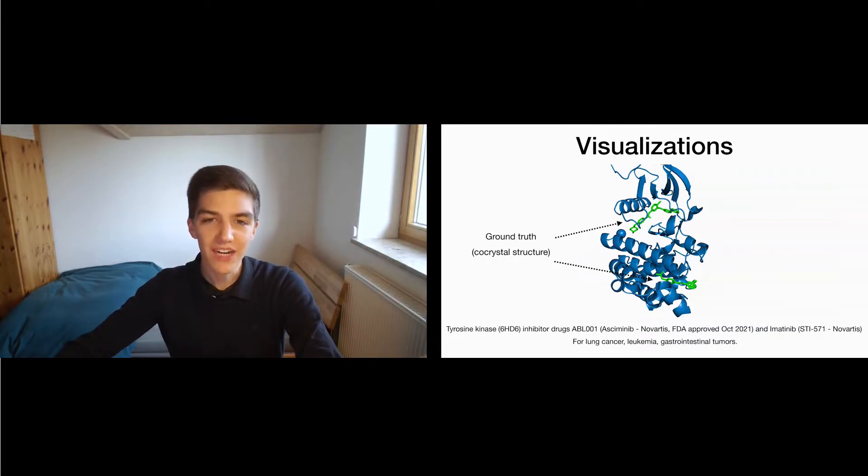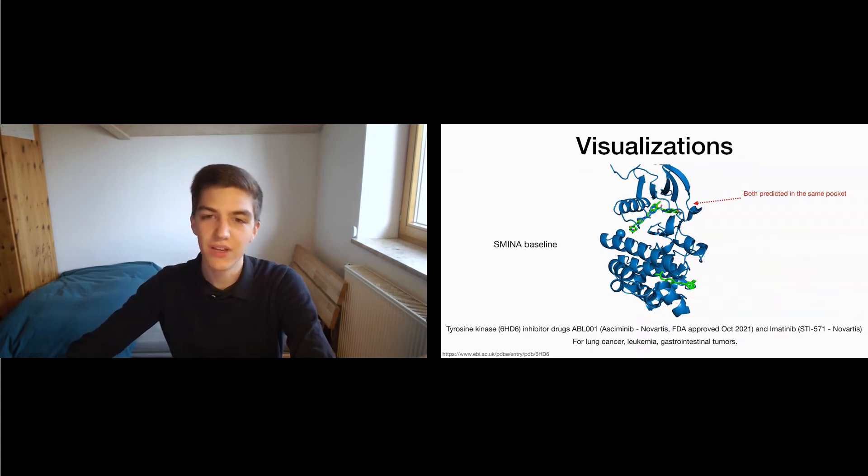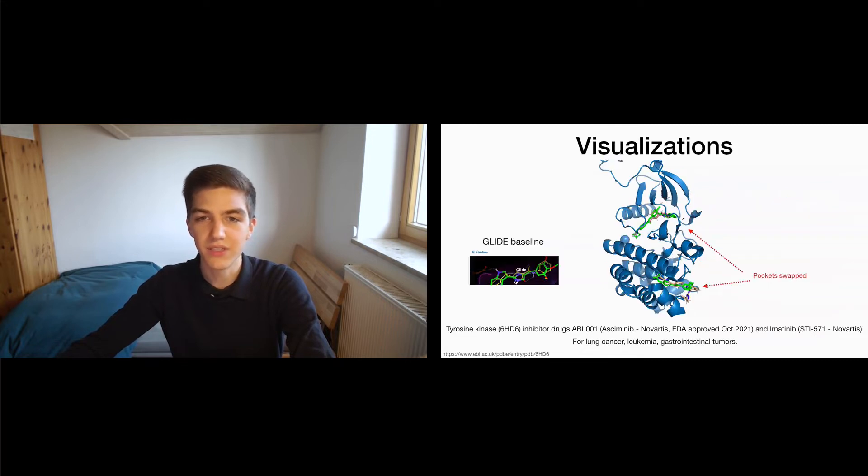Here, we are looking at an important target protein. And in green, we have the configurations in which two drugs bind to it. These we would like to predict. Then, we can look at the predictions of some baselines. With Gnina, we predict both drugs to be in the same pocket. So, one of the predictions is wrong. Similar with Smina, we predict both to be in the other pocket. And Glide switches both of them around.